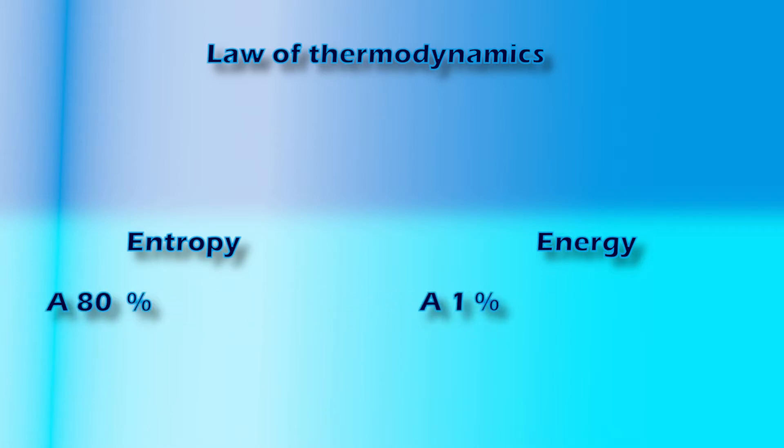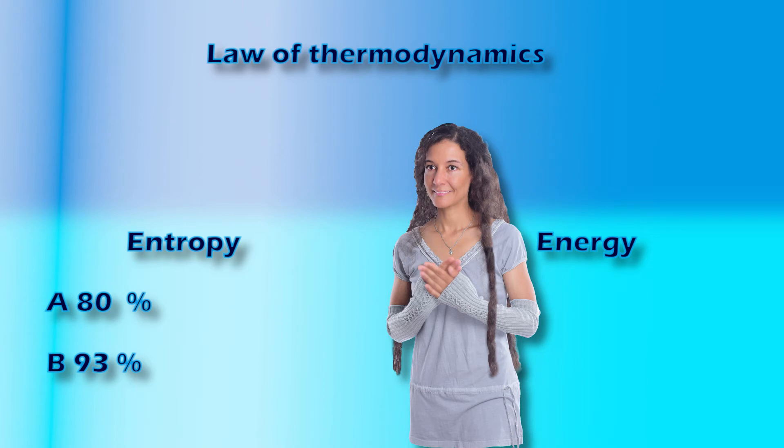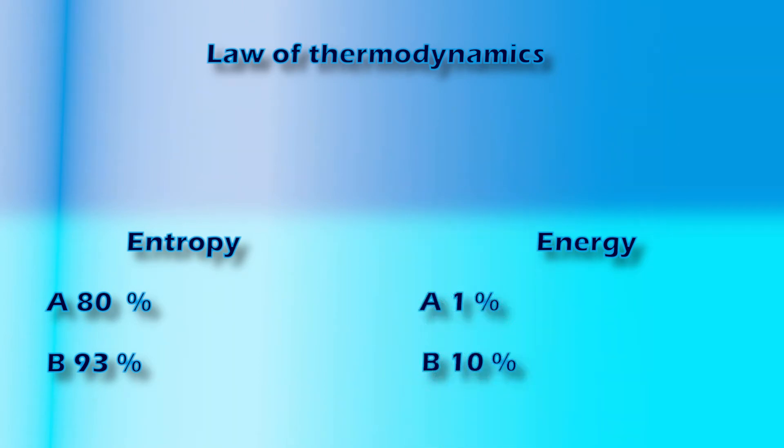The connection between A and entropy is 80% and between A and energy 1%. The connection between B and entropy is 93% and between B and energy 10%. This does not indicate that the probability value of the connection between B and the principle of thermodynamics is higher than the value of the connection between B and entropy and energy. This is the Simpson's paradox.